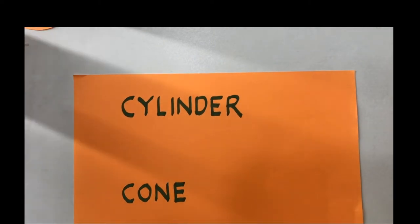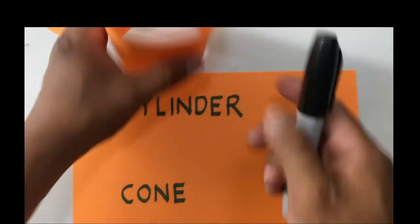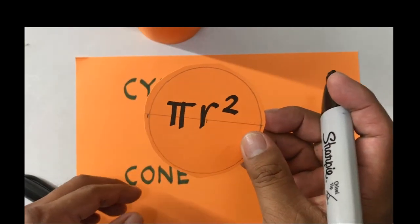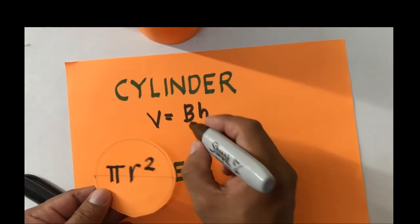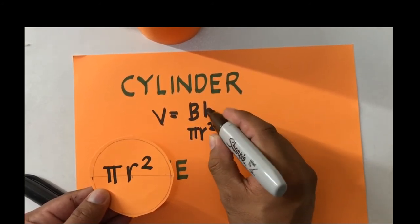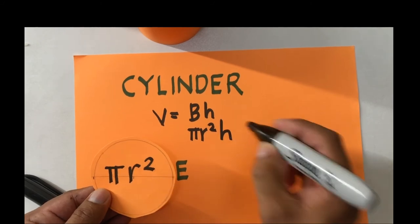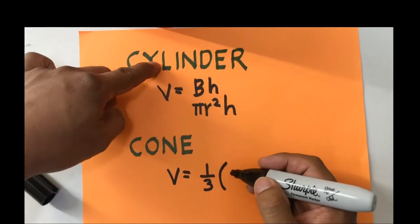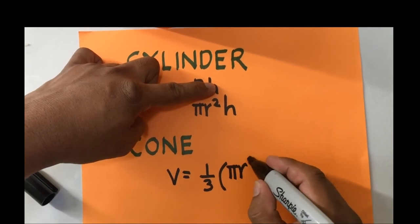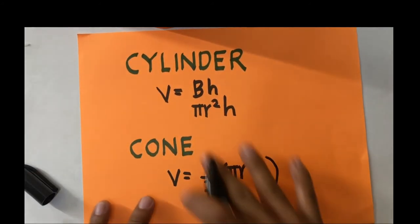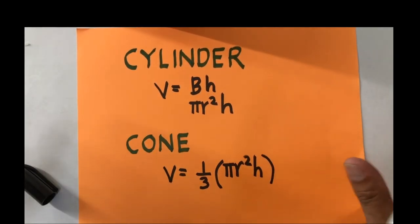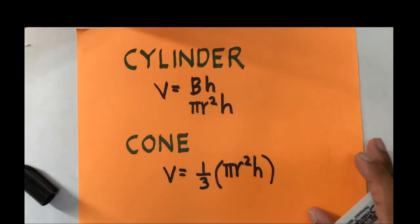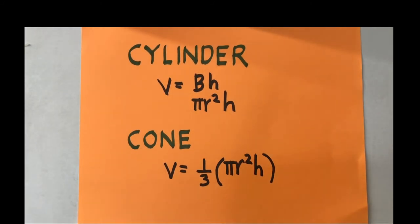Let's write down our observation. The volume of the cylinder is equal to the area of the base times the height. The area of the base is pi r squared because the base is circular, so this becomes pi r squared times h. And for the cone, it is one-third of that of the cylinder: one-third pi r squared h. Once you remember this physical connection of using rice to measure the volumes, you will remember this formula because you can see the connection in your mind.